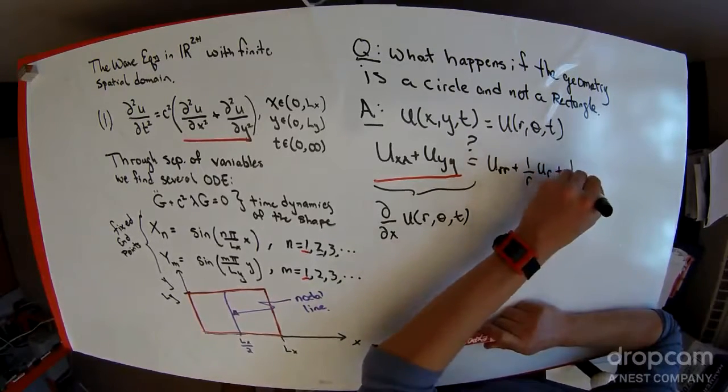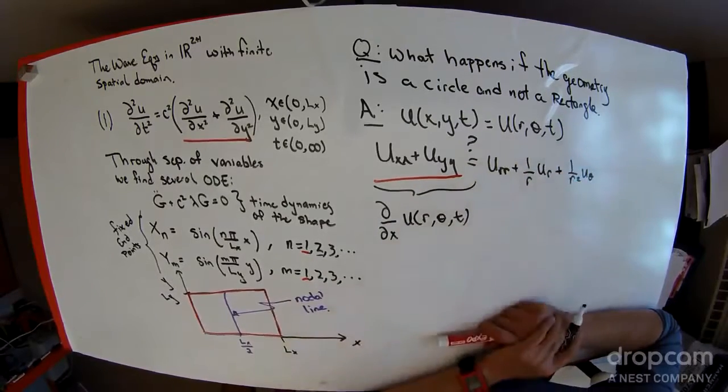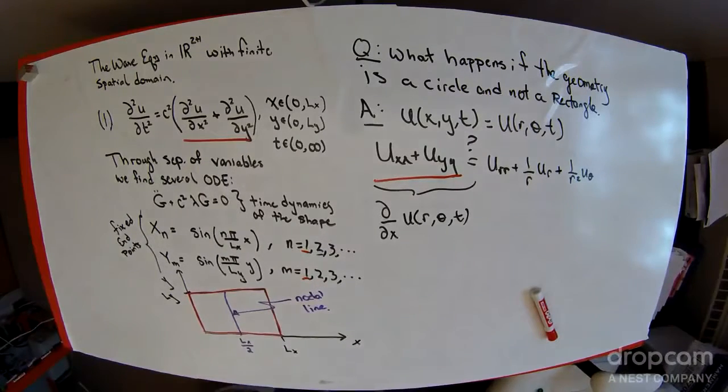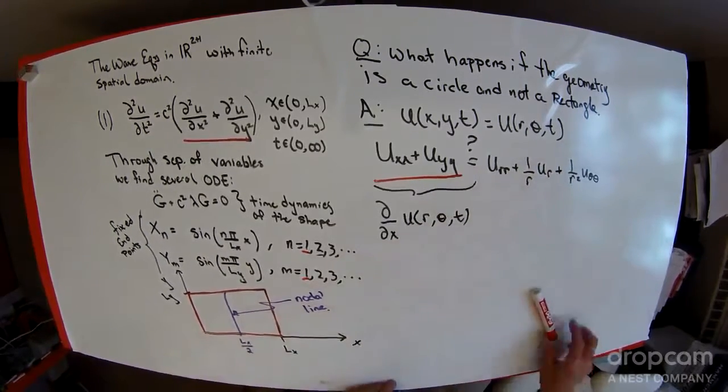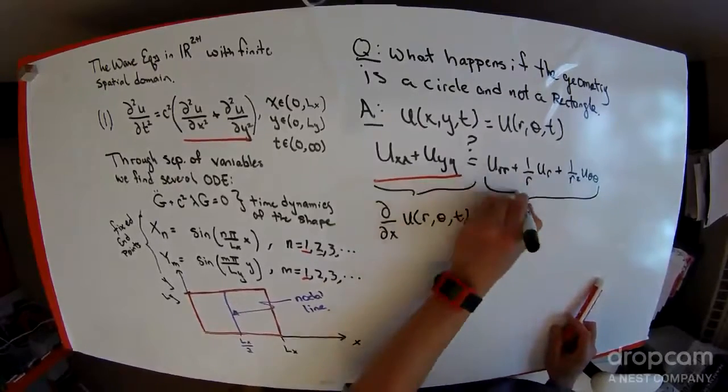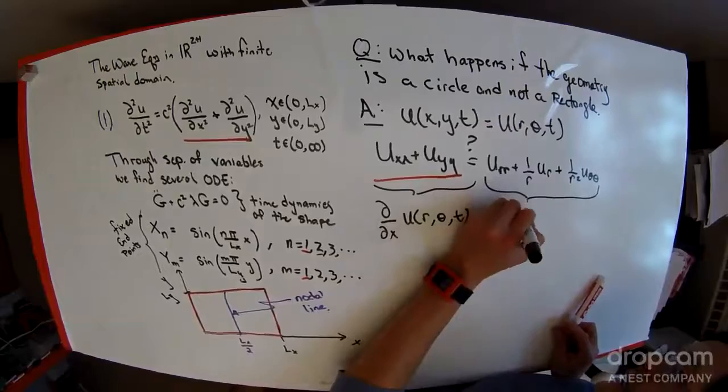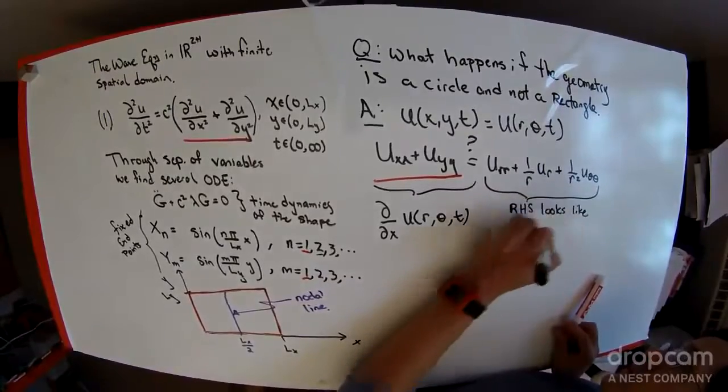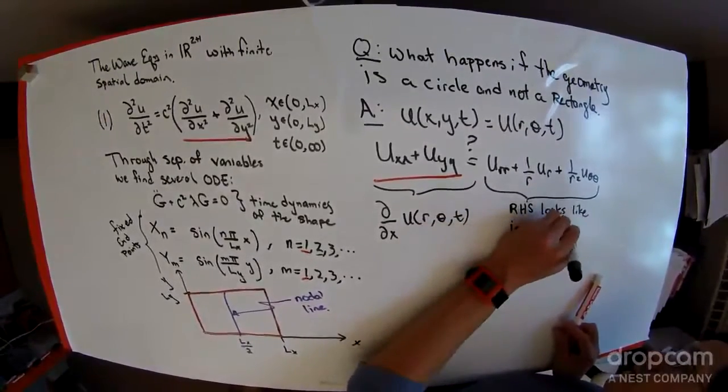When you apply the multivariate chain rule to this set of partial derivatives, you get u_rr plus 1 over r u_r plus, yeah, I think it goes like 1 over r squared u_theta. Let me look that up really quick. Yeah, this is actually two derivatives on theta. My mistake. So this is what the right hand side looks like in polar coordinates.